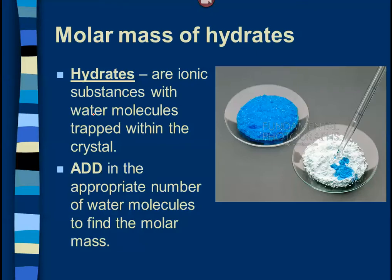While we're on the subject of molar masses, we need to talk about the molar masses of hydrates. They are ionic substances that have water molecules trapped within them — certain things might look like a totally dry powder, but there's actually water inside. For instance, this is copper sulfate pentahydrate. It happens to look blue, but that's not always the case. If you heat it, the water gets driven off and it turns to what we call the anhydrous form — it turns white. You can turn it right back to the hydrate again just by adding a couple of drops of water.